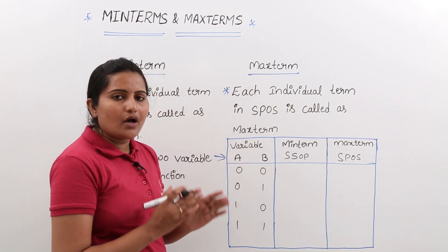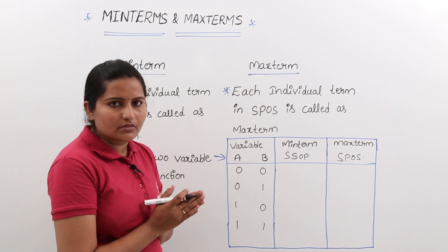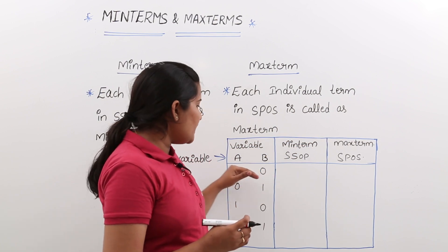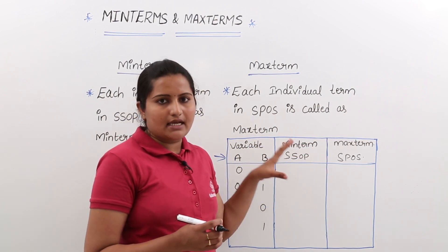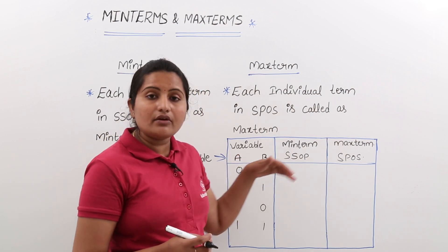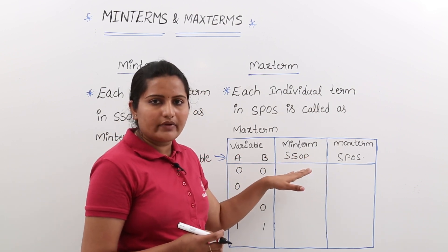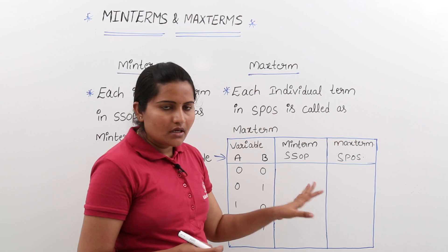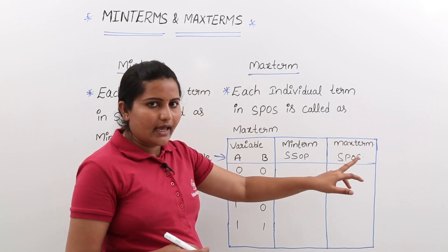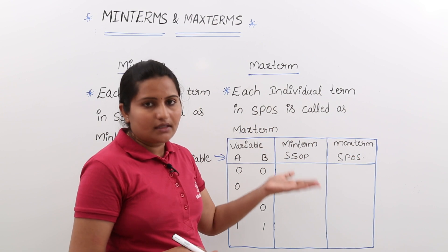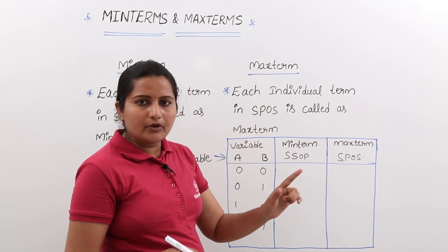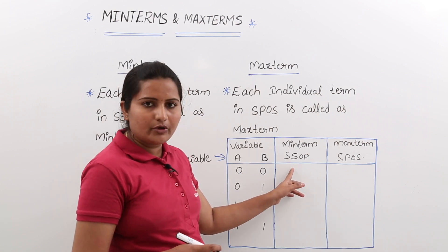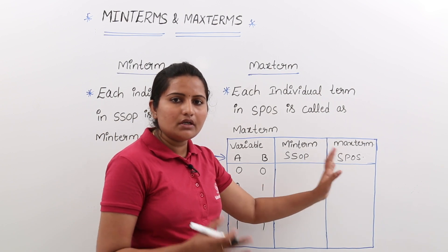Now we will see how to write min terms and max terms. In min terms, which are product terms, whenever 0 is there you take the complement of the variable, and whenever 1 is there you take the actual variable. Whereas in max terms, when 0 is there you take the actual variable and when 1 is there you take the complement. In min terms you put multiplication between variables; in max terms you put addition.